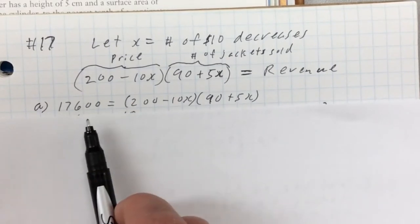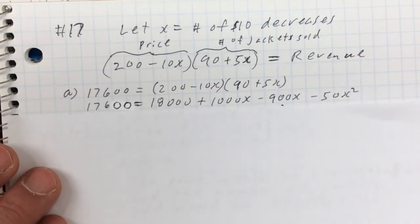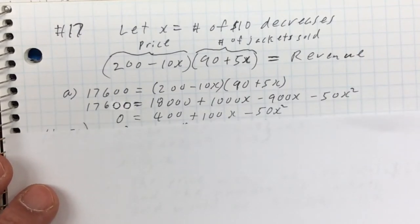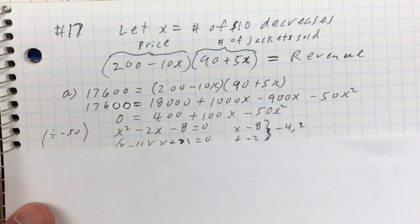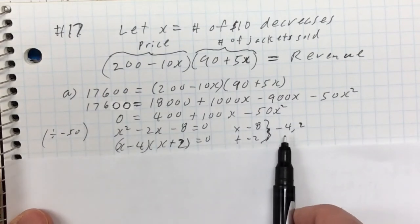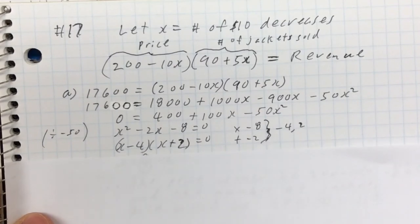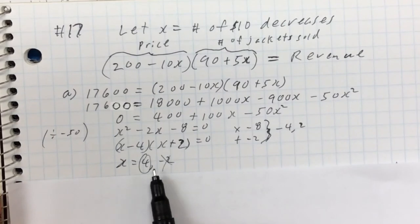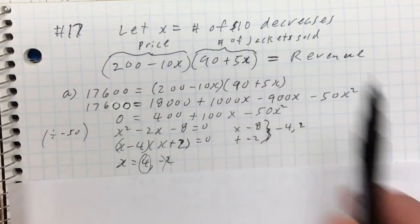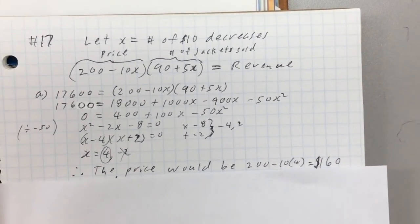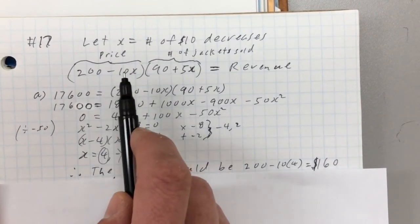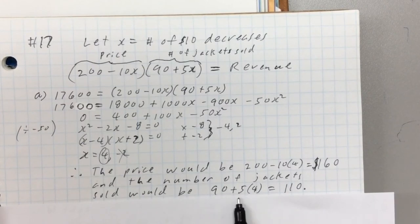Expanding the equation, collecting like terms, and bringing everything to one side gives a quadratic. We notice we can divide through by 50, and then we can factor it — no need for the quadratic formula. We get two answers: X = 4 and X = −2. We use X = 4 because X represents the number of $10 decreases, and X = −2 would mean a price increase. So the selling price is 200 − 10(4) = $160, and the number of jackets sold is 90 + 5(4) = 110 jackets.